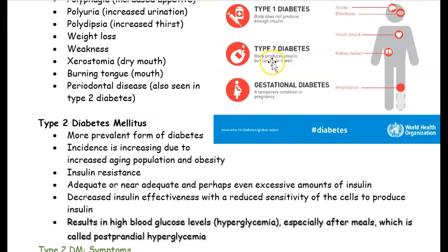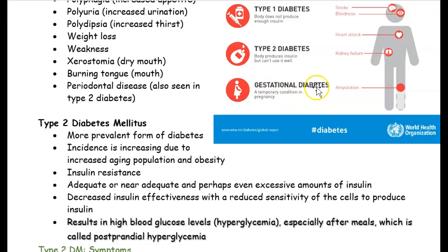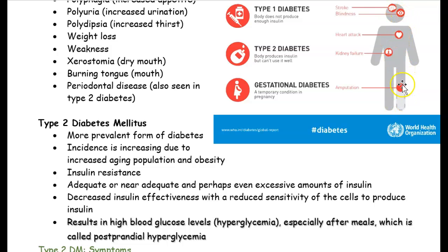There is also gestational diabetes, which only happens when you are pregnant. One of the things tested during pregnancy is whether you have diabetes, and if you do, it's known as gestational diabetes. Diabetes is pretty bad if not controlled — complications include stroke, blindness, heart attack, kidney failure, and even amputation of a leg or foot.